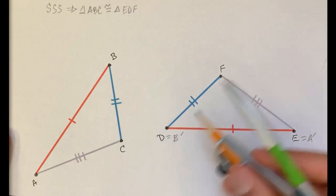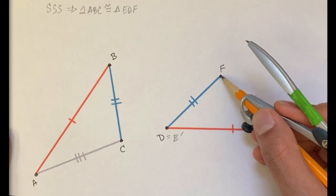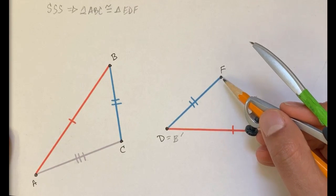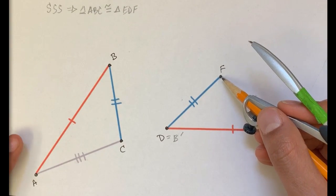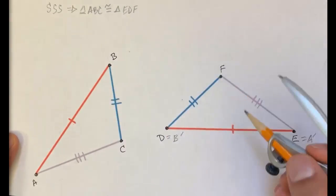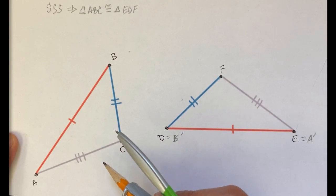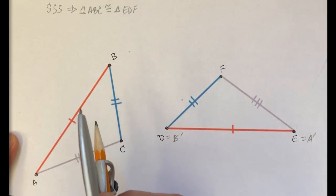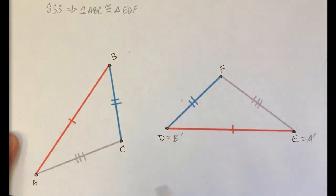If we can show that for sure, C is either at point F or with another rigid transformation we can get C to point F, then we would have completed our proof. We would have been able to show that with a series of rigid transformations, you can map this triangle onto that triangle.